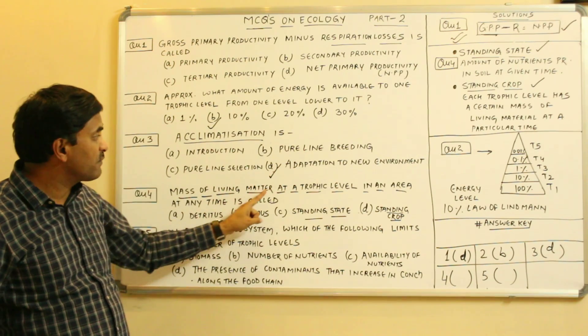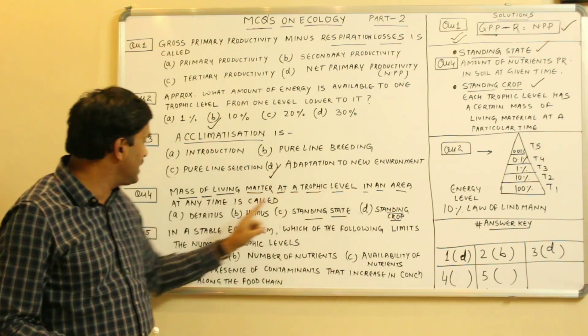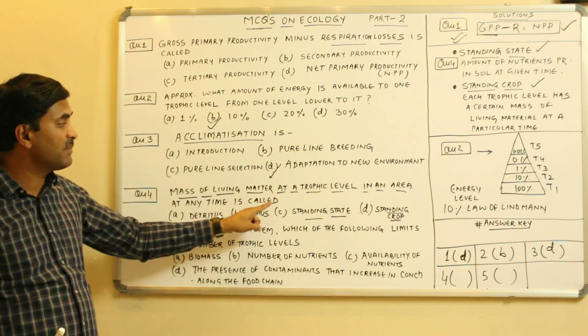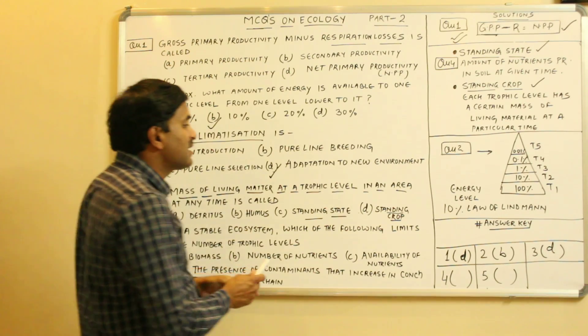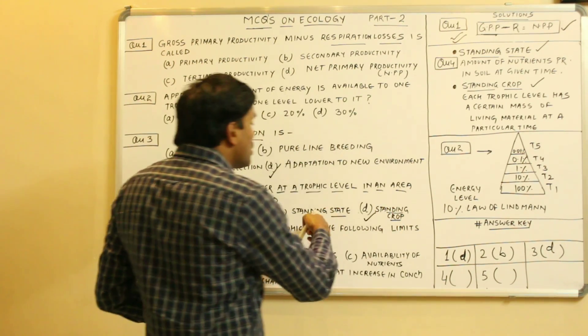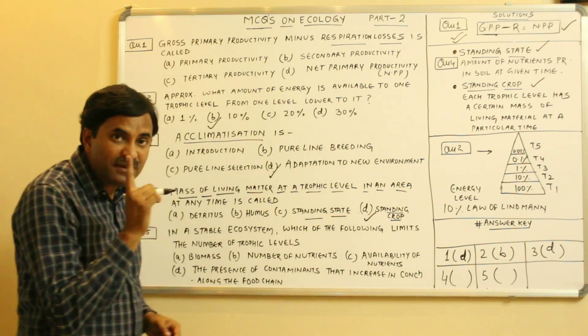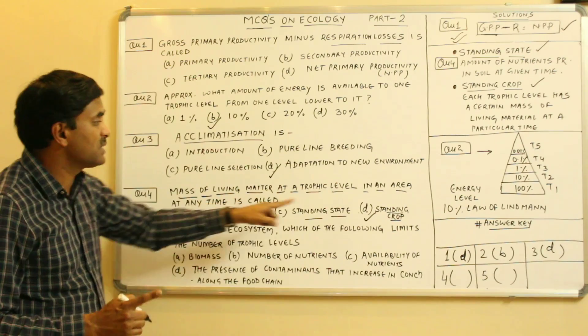The question asks: mass of living material at a trophic level in an area at a given time. So the answer is standing crop, not standing state. Question number 4 has answer D.